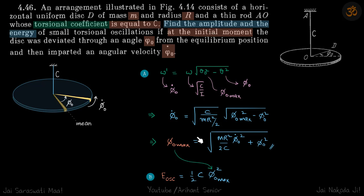The energy of oscillation is then ½c·theta-naught-max². Substituting the value of phi-naught-max we just found gives the final answer for the energy.